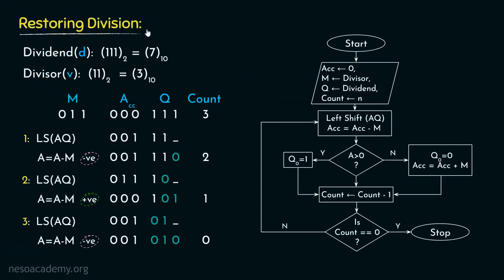Now during the restoring division, we had been performing an awful lot of restorations whenever the subtraction's result became negative. And how did we perform the restoration? Basically, the contents of the accumulator after the subtraction, if it became negative, we had to perform this addition to restore the contents of the accumulator. Now let's carefully observe the steps involved in this particular restoring algorithm.